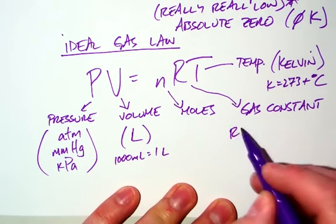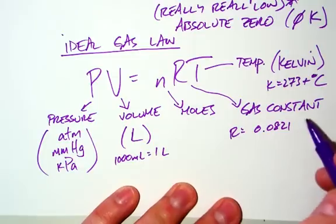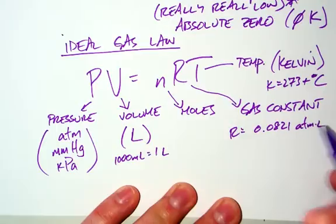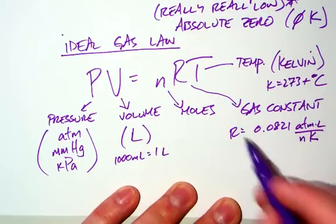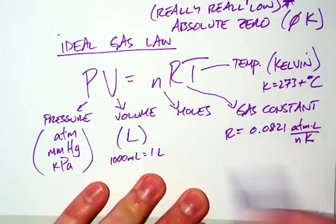Your gas constant R can be 0.0821 with some crazy units. If it's in atmospheres, this is our number. And the units are atmospheres liters over mole Kelvin.